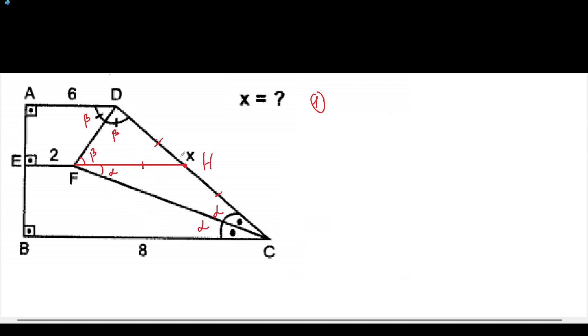And we can see that DC is divided by two line segments that are equal, which means that EH will be a midline here. And now we can find out the midline by the formula 8 plus 6 over 2, which will give us 7.